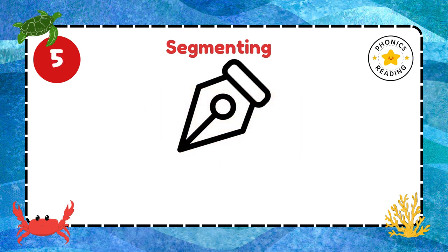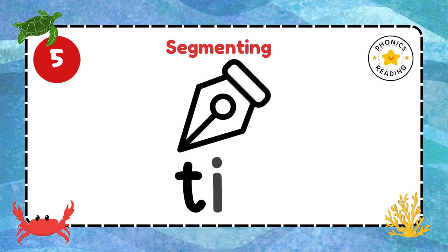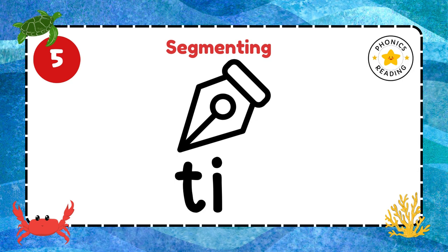Can you write tip? What we have to do? We have to listen to the sounds, identify the sounds, and segment the word. Tip. T is the first sound. Write it. I is the second sound. What do you hear at the end? P is the last sound. Very good.